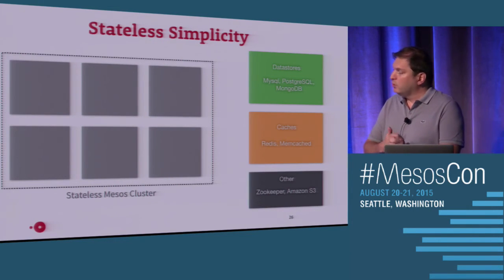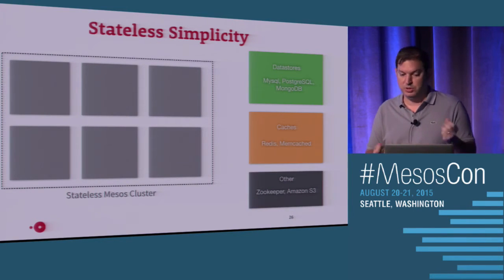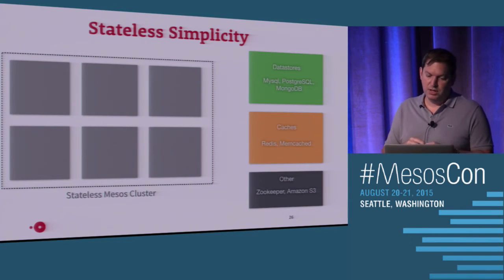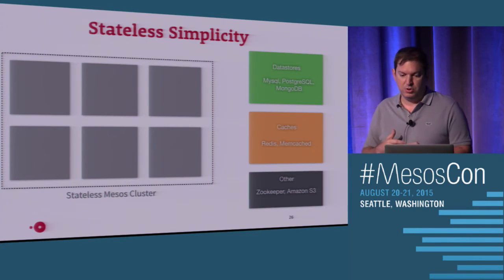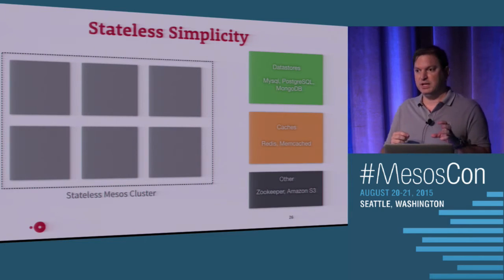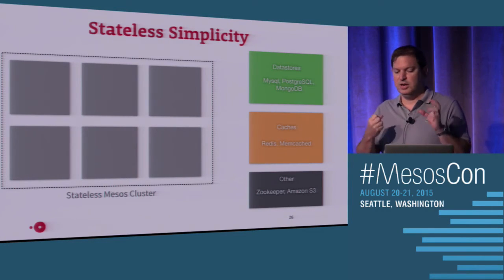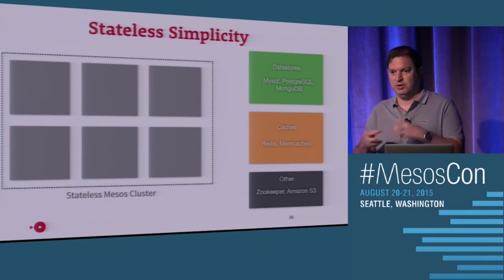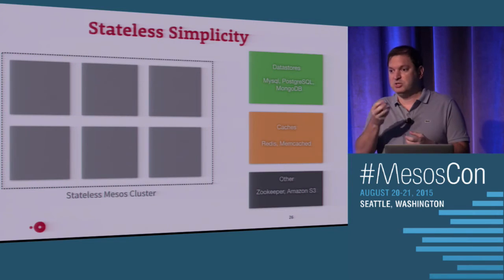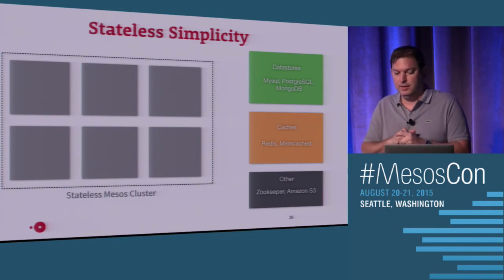Another option we took is having a very stateless Mesos cluster. We don't rely on anything written to the file system. We don't run data stores inside the Mesos cluster — no Memcache instances or Redis. All of those run outside the cluster: MySQL, Postgres, Mongo, cache instances, ZooKeeper, and Amazon S3. The simplicity of statelessness lets you treat slaves as immutable pieces and applications as immutable blobs. You can kill a slave and all the applications migrate to other places — the applications are agnostic about where they run.